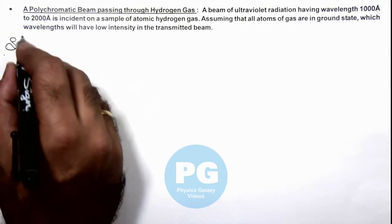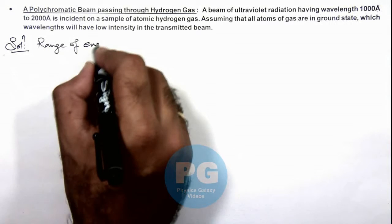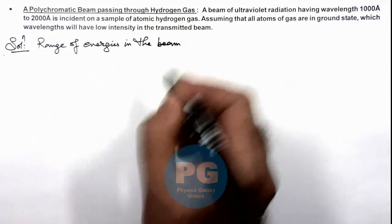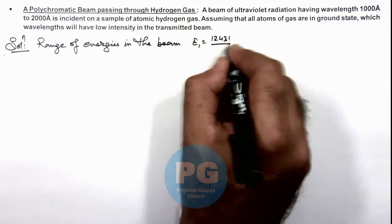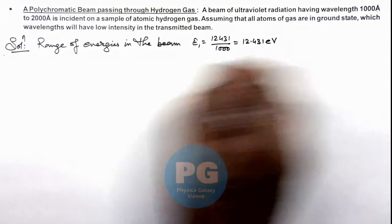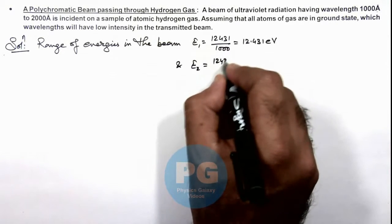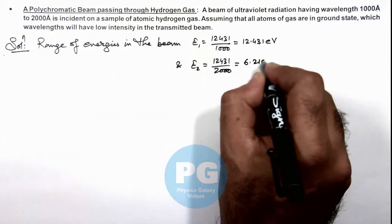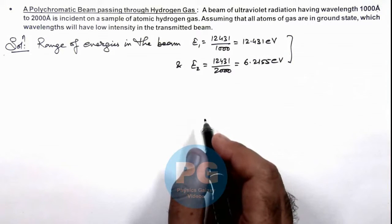First, we can calculate the range of energies in this polychromatic beam. E1 corresponds to 12431 divided by 1000 angstrom, which is 12.431 electron volt. And the energy corresponding to 2000 angstrom is 12431 divided by 2000 angstrom, which is 6.2155 electron volt. That means all energies within this range are present in the radiation beam.